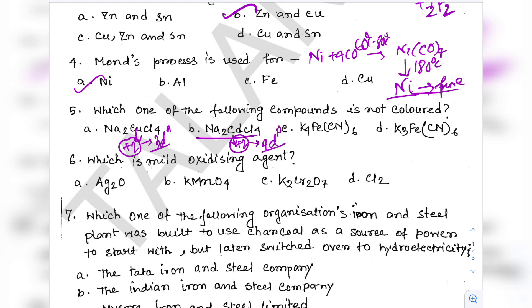Question 11: When KMnO4 acts as an oxidizing agent and ultimately forms MnO4²⁻, Mn2O3, and Mn²⁺, the number of electrons transferred in each case respectively are — options include 1,3,4,5 / 1,5,3,7 / 1,3,4 / 5,1,3. The answer is option C: 1, 3, 5. For example, when Mn goes from +7 to +2, five electrons are transferred. You can calculate each case by tracking oxidation state changes.